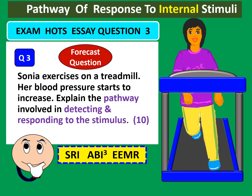Let's now discuss a third question — also an exam HOTS essay question which may be asked in the exam. This question involves an internal stimulus; the previous two questions involved external stimuli such as light and sound. This is also quite a good question because it has not been asked in the exam yet, and we are dealing with the topic of blood pressure, which has been discussed in Chapter 1 Form 5 on transport. So you should have some background knowledge. Sonia exercises on a treadmill and her blood pressure starts to increase — explain the pathway involved in detecting and responding to the stimulus. Take about 15 minutes if you are able to.